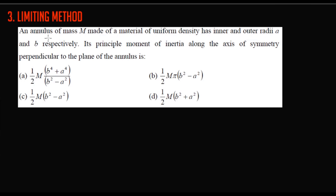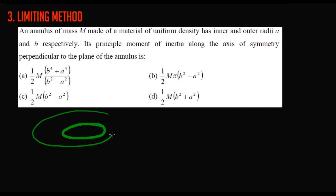Another question using the limiting method: an annulus of mass M with uniform density has inner radius 'a' and outer radius 'b'. Find the principal moment of inertia along the axis of symmetry perpendicular to the plane of the annulus. The annulus has an outer ring at radius b and an inner hole at radius a.